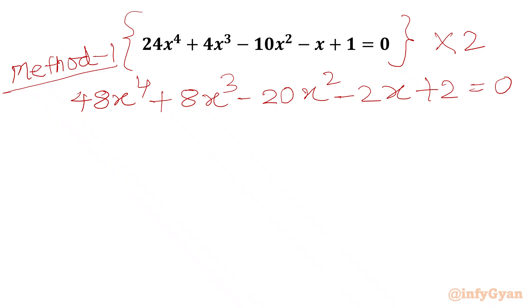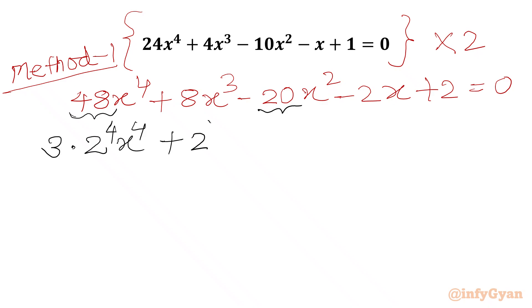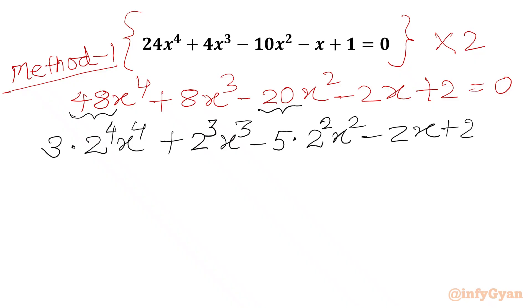Now we are going to factor 48 and factorize 20. So I can write 48 as 3 times 16, and 16 can be written as 2⁴, giving 3 times 2⁴ · x⁴. Then 8 in exponent form is 2³, giving 2³x³. And 20 is 5 times 4, where 4 is 2², giving minus 5 times 2² · x². Then we have minus 2x plus 2 equal to 0.